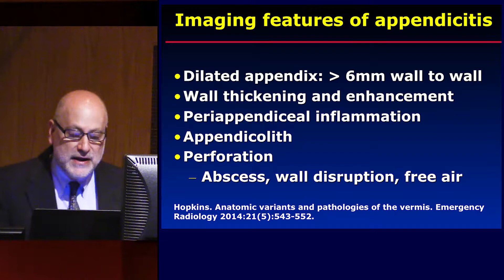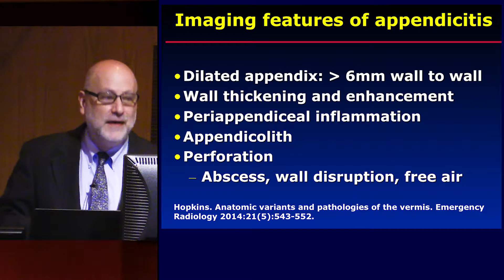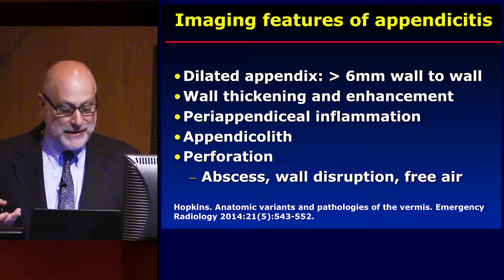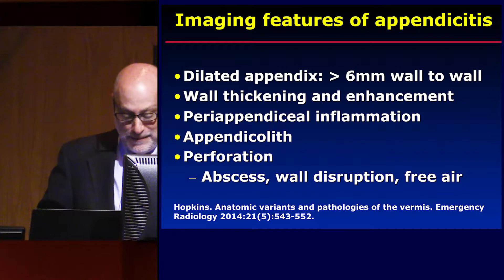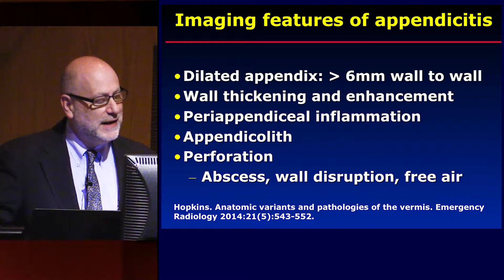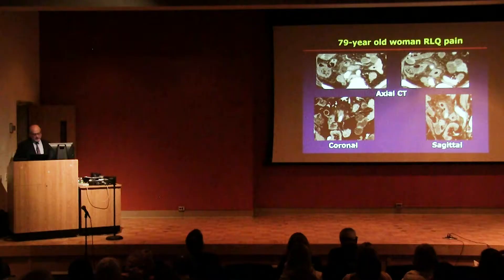Here are some imaging findings we look for in routine non-neoplastic appendicitis. The appendix is dilated because it's functionally obstructed and filled with pus, not mucin. You can see wall thickening and enhancement, and surrounding inflammation. Sometimes there's a literal stone called an appendicolith within the appendix. And just like with diverticulitis, if the colon can perforate, sometimes the appendix can perforate due to inflammation — and we can look for surrounding imaging features to suggest perforation.